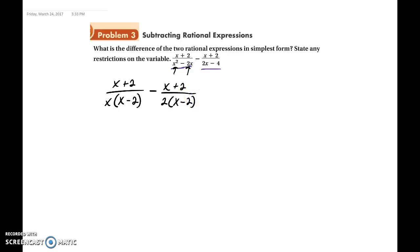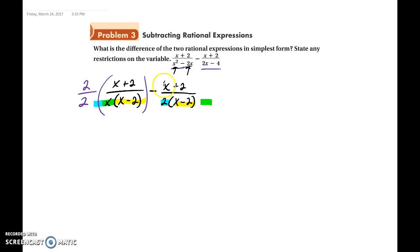Now we need to look to see what we're missing. Here I have an x minus 2, and here I have an x minus 2. Here I have an x — I'm missing that x — and here I have a 2, and I'm missing that 2. So that means in this fraction I need to multiply by 2 over 2, and in this fraction I need to multiply by x over x, so that way I have all my denominators.